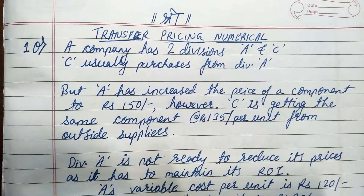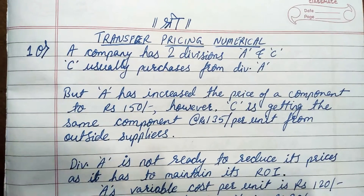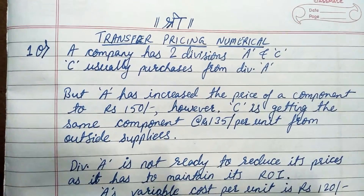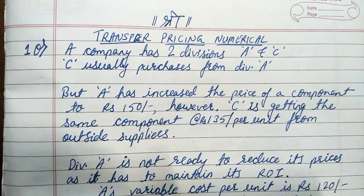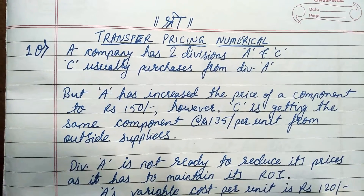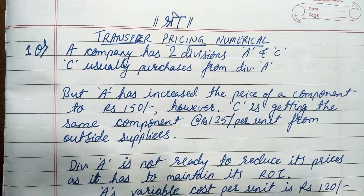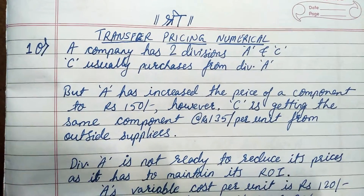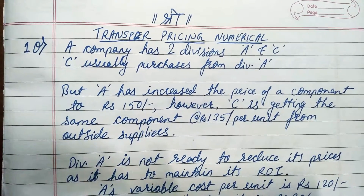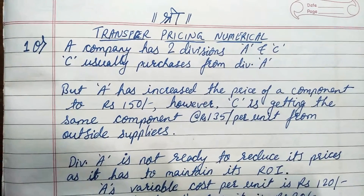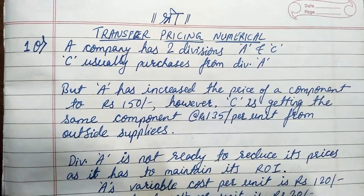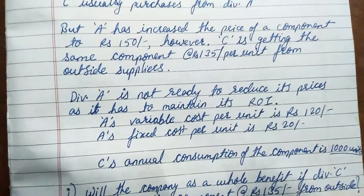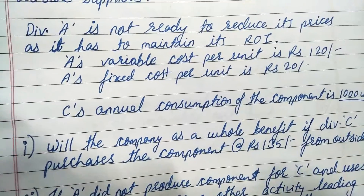The question is: a company has two divisions, A and C. C usually purchases from division A — these are two divisions of the same company. A supplies material to division C, but A has increased the price of a component to rupees 150 per unit. However, C is getting the same component at 135 rupees per unit from outside market suppliers. Division A is not ready to reduce its prices as it has to maintain its return on investment.